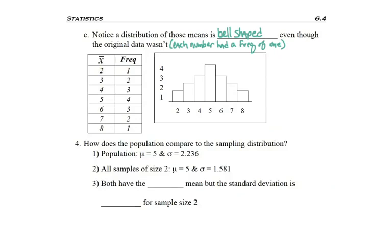The other thing is to compare the distribution to the population. Below, I've restated the population mean and standard deviation of the numbers 2, 4, 6, and 8. Of all 16 samples we found, the mean of the sample means was 5 and the standard deviation was 1.85. Both distributions have the same mean, but the standard deviation is smaller for sample size 2 — the standard deviation went down for the sample versus the population.